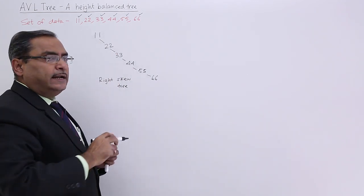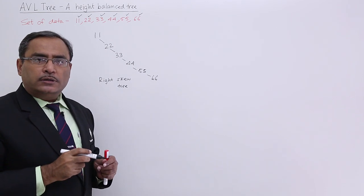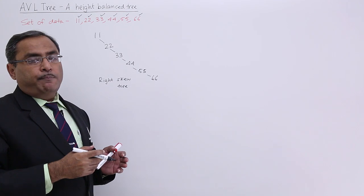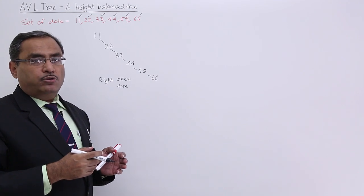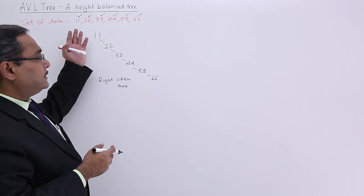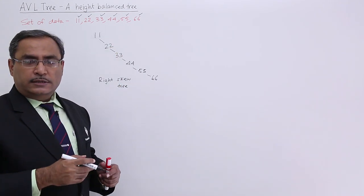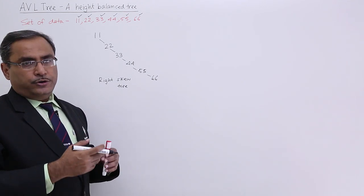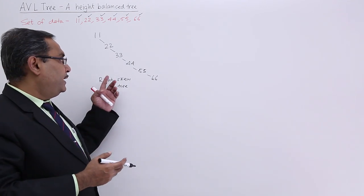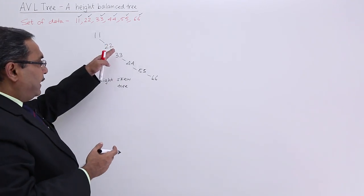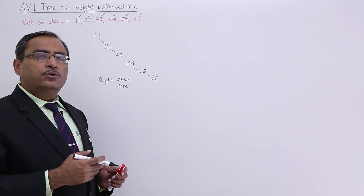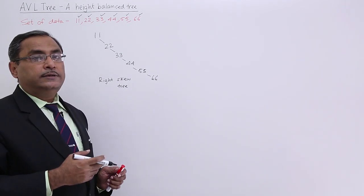If you take this data in descending order, then what tree are we going to get? If we form a binary search tree from data in descending order — 66, 55, 44, 33, 22, 11 — then obviously we shall get a left skewed tree, where except the leaf node, all nodes will have only a left child.